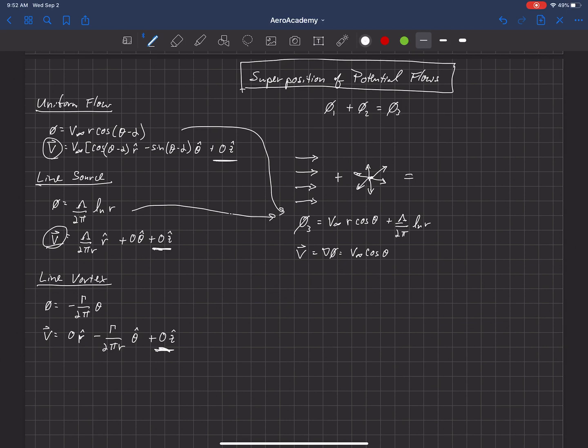So what we're going to get there is V infinity times cosine theta plus lambda over 2π r, and that's all in the r hat direction. And then in the theta direction, we'll have minus V infinity sine theta. And that's the only term in the theta hat. And then we have zero again in the z hat, which is coming out of the page.